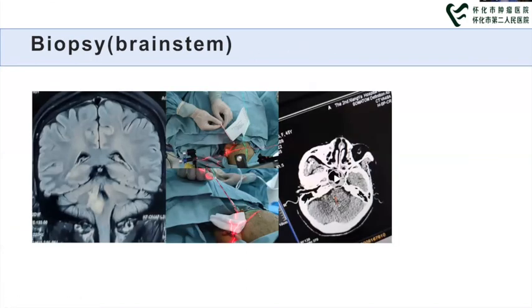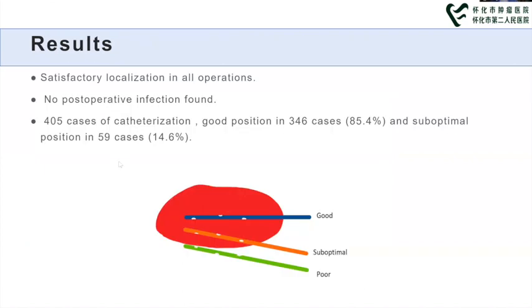Perhaps the most challenging case is a biopsy of the lower brainstem region. This is a 39-year-old female patient treated at the biggest hospital in the area. Because the stereotactic instrument was difficult to operate in this location, the biopsy was performed using the laser positioning system, and the result was finally confirmed to be inflammation, not tumor. In the evaluation study, satisfactory location was achieved in more than 85% of patients. No postoperative infection was found among these patients.